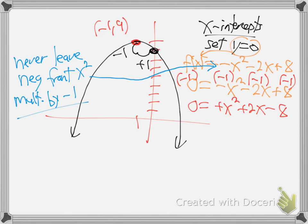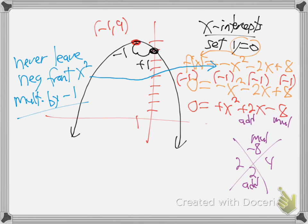Now do the diamond thing. So what multiplies to be negative 8 and adds to be 2? What times what is 8? Four times two. How do you know the signs? Whatever sign is on the bottom goes to the bigger. Plus on the bottom goes to the bigger: plus four, minus two. Multiplies to be negative 8, adds to be plus 2. So it factors as zero equals x minus 2, times x plus 4.